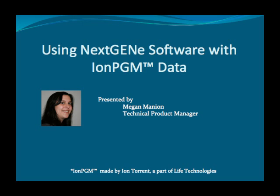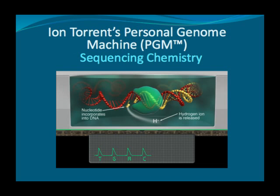In this webinar, we'll discuss using NextGene software with IonPGM data. IonPGM is the novel next-generation sequencing system from IonTorrent. IonTorrent's personal genome machine works by calculating changes in pH to detect when a nucleotide is incorporated. One nucleotide at a time is flooded into the chip. Upon incorporation of a nucleotide, as in nature, a hydrogen ion is released, and the resultant pH change is detected by the proprietary ion sensor.